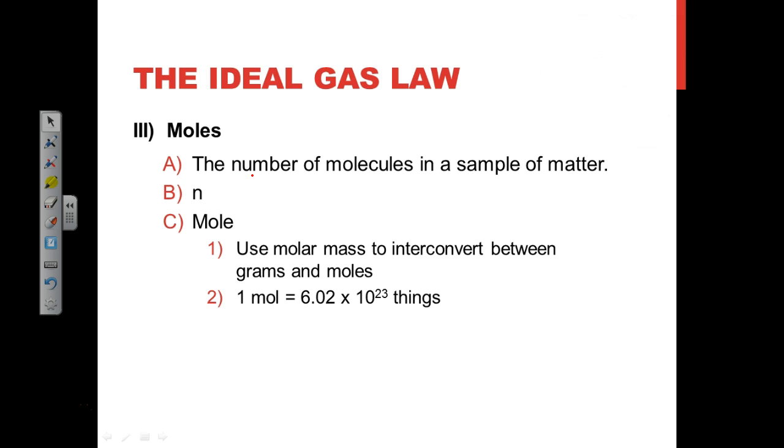The moles are the number of molecules in a sample of matter, but we don't count the molecules like 1, 2, 3, 4, 5, 6, 7. We have specialized ways. A mole is actually equal to 6.02 times 10 to the 23rd things, whether that thing is a donut or pennies or grains of sand or corn kernels or sweet potatoes or atoms. It doesn't matter what they are, but that's how many things are in a mole.